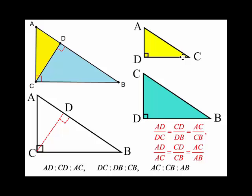So now I got, you know, this longer leg, DC, DB, and CB listed. And the hypotenuse is AC, CB, and AB.